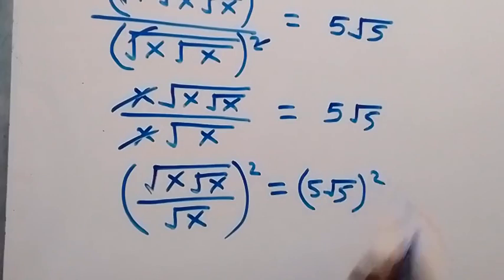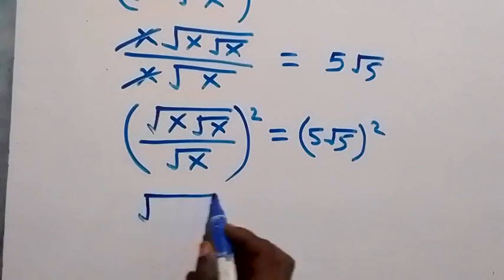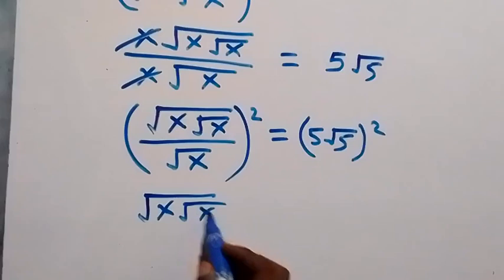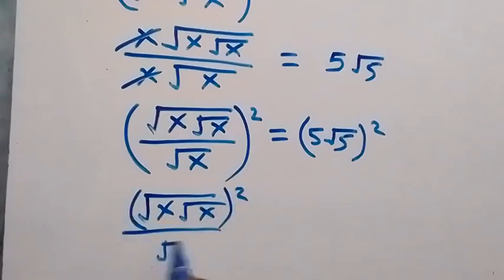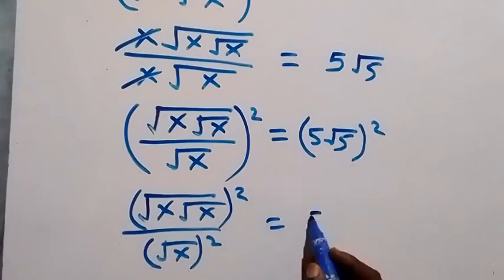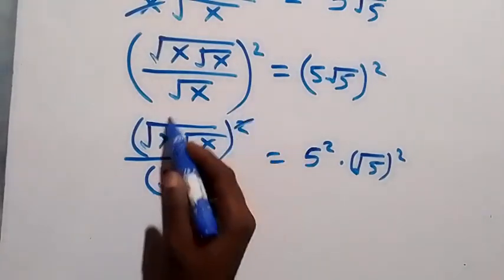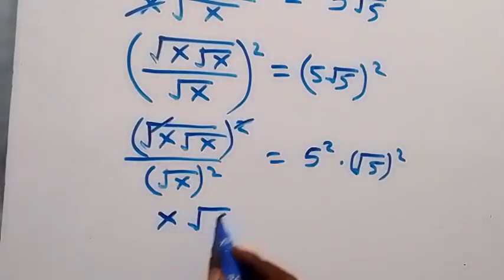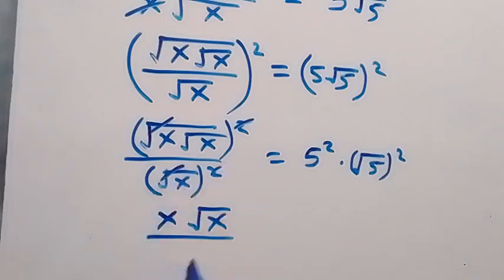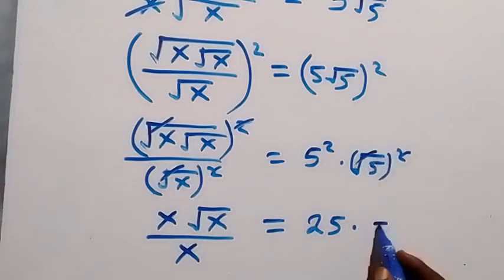We square this side and also this side. The square cancels the square root here, leaving x root x. The square also cancels the square root on the other side, and we are left with x which equals 25 — that is 5 times 5. Then the square cancels the square root, leaving 5 on that side.